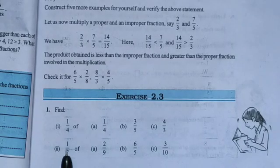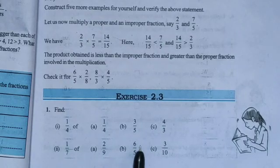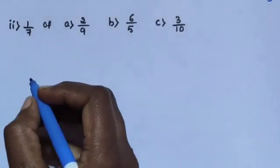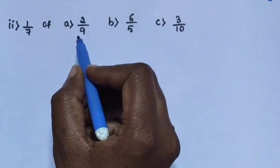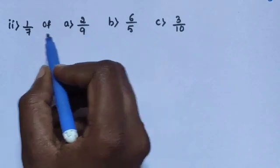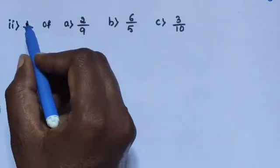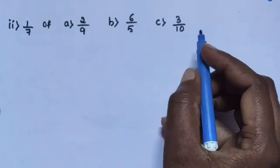Next, sub-question 2: question A is 2/9, question B is 6/5, question C is 3/10. Using the same process, 1/7 is multiplied by question A, again 1/7 is multiplied by question B, again 1/7 is multiplied by question C.